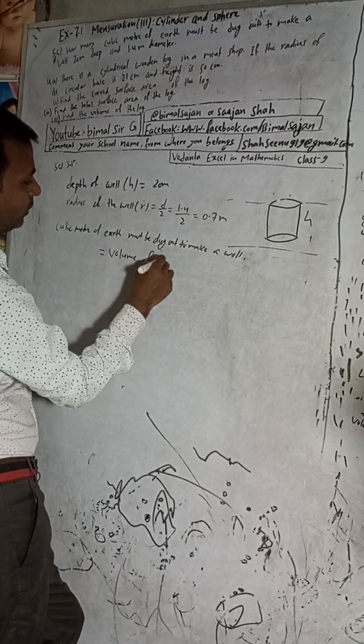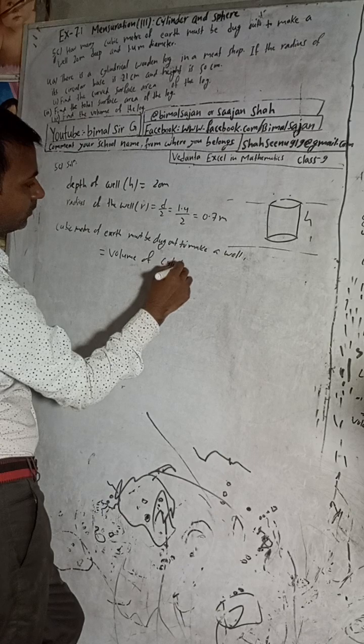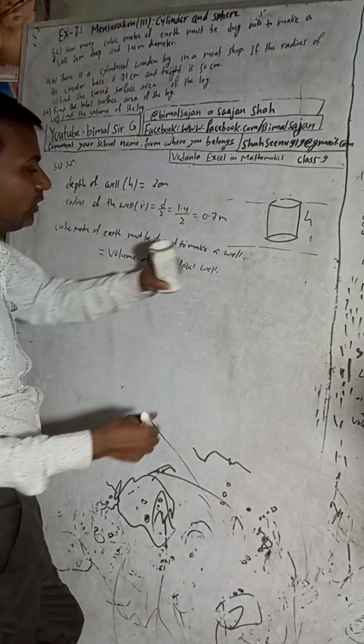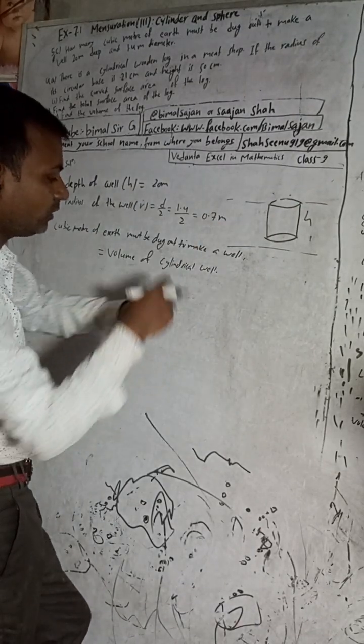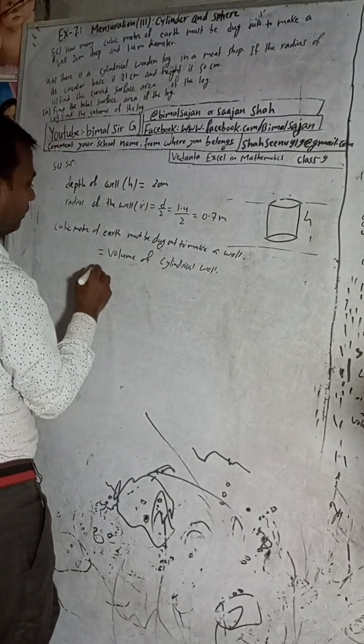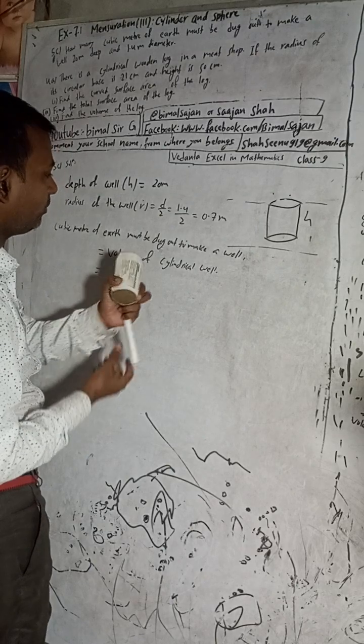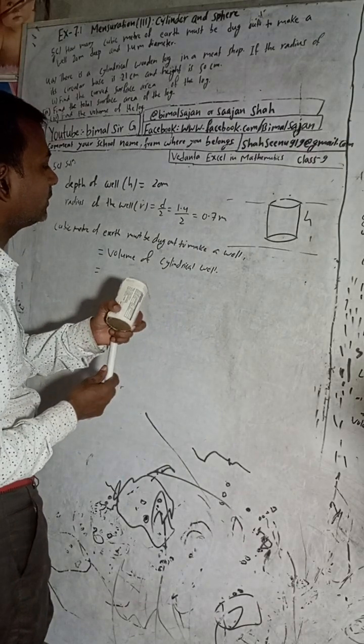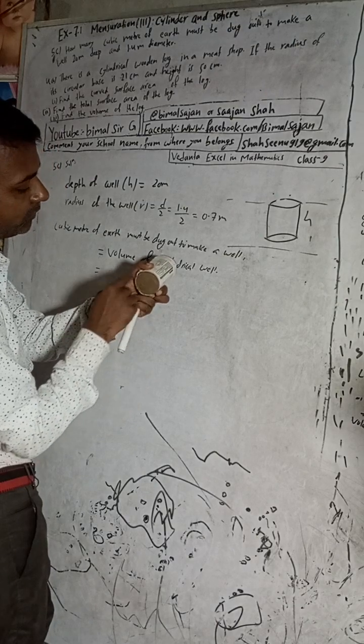Volume of cylindrical well. Cylindrical well means the shape of a cylinder, round with a circle. So what will be the formula? Volume of this cylinder is how much? Area - so π r² into h.